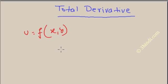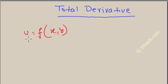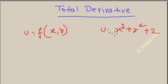Hello. In this video I will teach you about the total derivative. In a previous video I explained how to differentiate any function which is a function of two types of variables — you can differentiate partially. So what will happen if the two variables themselves are a function of another variable? Suppose we have a function of X and Y, something like u = x³ + y² + 2.